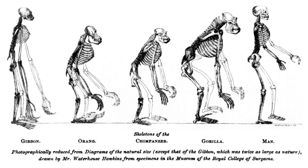Charles Darwin's views about common descent, as expressed in On the Origin of Species, were that it was probable that there was only one progenitor for all life forms: "Therefore I should infer from analogy that probably all the organic beings which have ever lived on this earth have descended from some one primordial form, into which life was first breathed."